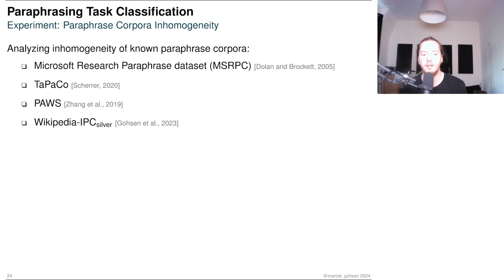Due to the high accuracy of our new paraphrasing task classifier, we can use it to analyze the inhomogeneity of commonly used paraphrase datasets. For that, we employed the MSRPC, TAPACO, PAWS, and Wikipedia-IPC datasets.